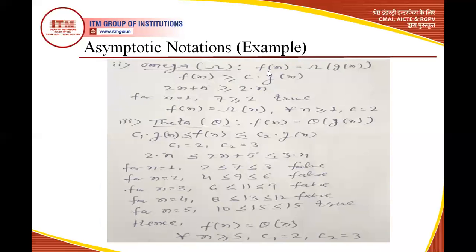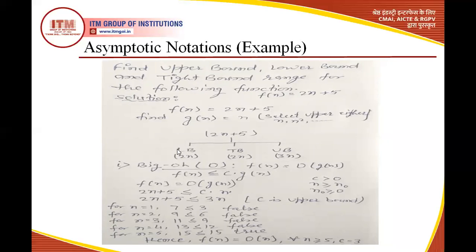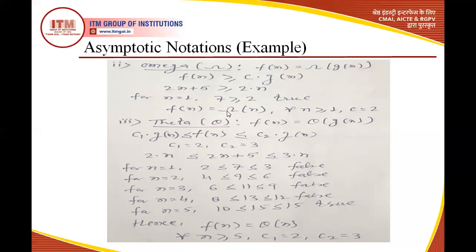Next, find Omega notation (lower bound). For Omega, f(n) ≥ c·g(n). The lower bound is 2n, so c = 2. Testing n=1: 2·1+5 = 7 ≥ 2·1 = 2 — true at the first value. Therefore f(n) = Ω(n) for all n ≥ 1 with c = 2. This gives the minimum running time of the function.